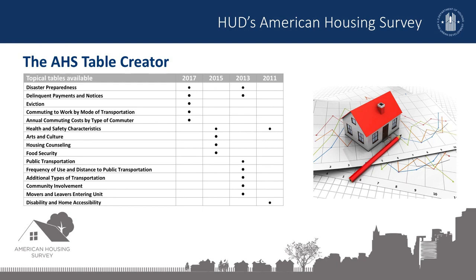Disaster preparedness, delinquent payments and notices, eviction, commuting to work by mode of transportation, annual commuting costs by type of commuter, health and safety characteristics, arts and culture, housing counseling, food security, public transportation, frequency of use and distance to public transportation, additional types of transportation, community involvement, movers and leavers entering unit, and disability and home accessibility.